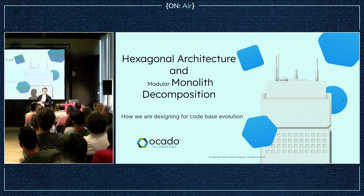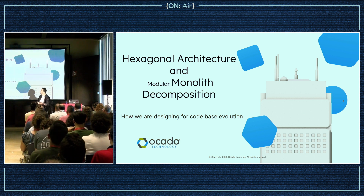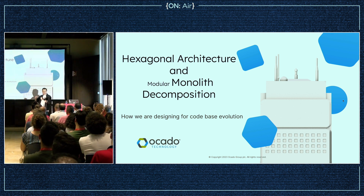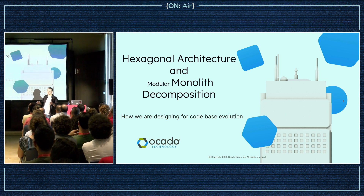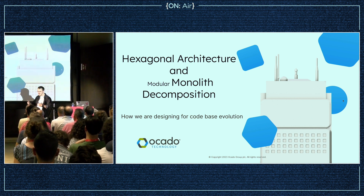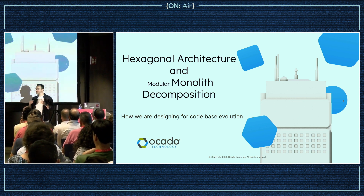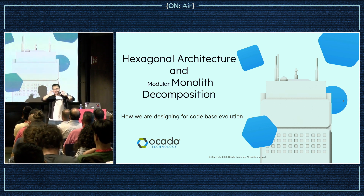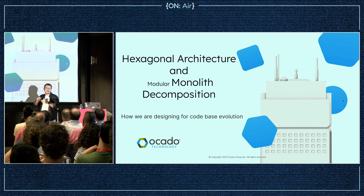Good afternoon. What I have prepared for you is Hexagonal Architecture and Modular Monolith Decomposition. I made sure to put the word 'modular' because there is a lot of baggage related with the word 'monolith decomposition', especially attributed to patterns like branch by abstraction and strangler fig. What is being covered here is an intra-microservice decomposition where we have a big monolith full of classes and we slowly decompose using ideas from hexagonal architecture inside a microservice.